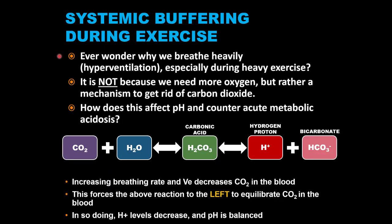Now, the extracellular buffering system is called the bicarbonate buffering system, and it is regulated through sensory receptors and breathing. As we increase exercise intensity, breathing rate increases. However, at a certain higher intensity, our ventilation increases exponentially — we begin to hyperventilate. The point at which you begin to hyperventilate is your anaerobic threshold, also referred to as the ventilatory threshold. So anaerobic threshold and ventilatory threshold go hand in hand. At the anaerobic threshold, protons accumulate and create an acute state of metabolic acidosis, which also negatively affects blood pH.